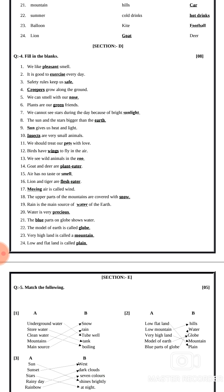Eighteen number: the upper parts of the mountains are covered with snow. Answer is snow. Nineteen number: rain is the main source of water on the earth. Answer is water. Twenty number: water is very precious. Paani bahut precious hai, bahut anmol cheez hai. Answer is precious.